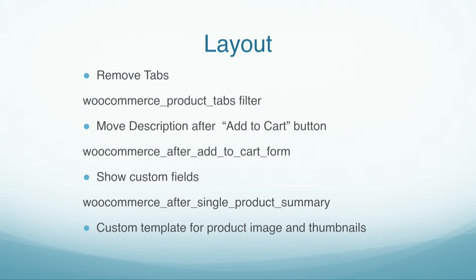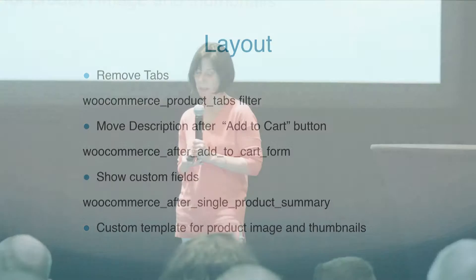Basically, I relied a lot on WooCommerce filters and actions. As the dev panel mentioned earlier, that's typically the preferred way of doing things so you don't have upgrade pain when the templates change. I was able to use the filter to remove the product tabs. Another action — WooCommerce after add-to-cart form — to place the description. Once the tabs are gone, your description's gone too, but we do want to show it. The custom fields get placed after the product summary. In this case, I did use a custom template for the product image and thumbnails that go with the product detail.